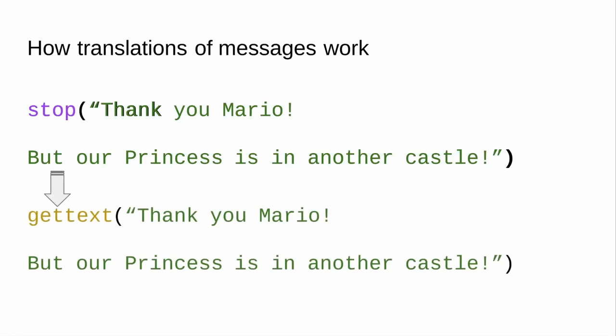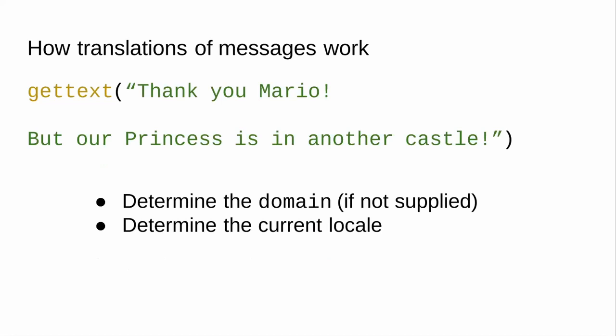If translation is happening on the R side, gettext is called; on the C side there are gettext interfaces that look basically the same. Gettext is doing two things: figuring out what the domain is — which you can think of as basically being the language — and where the message is being called from. Is the current R session running in English, Arabic, Bahasa, Japanese? What is the current domain?